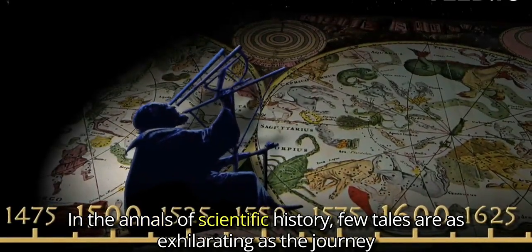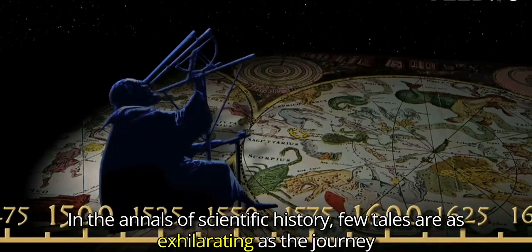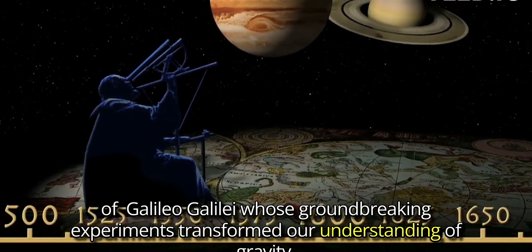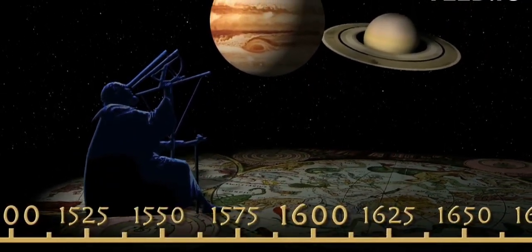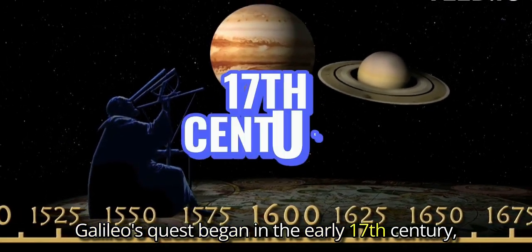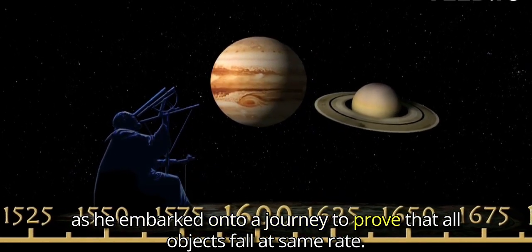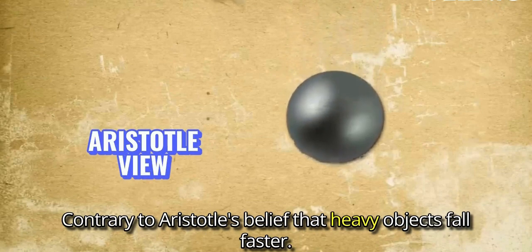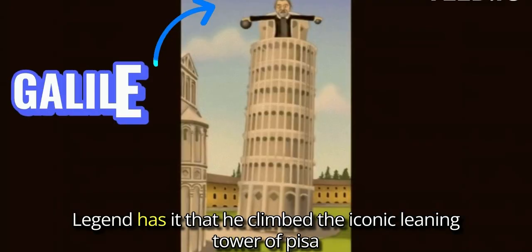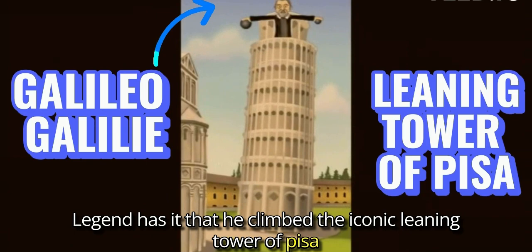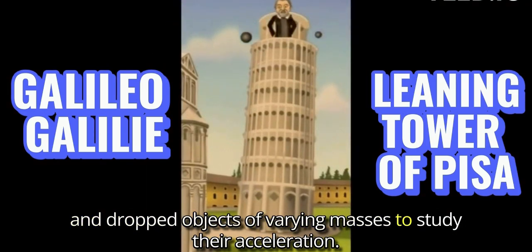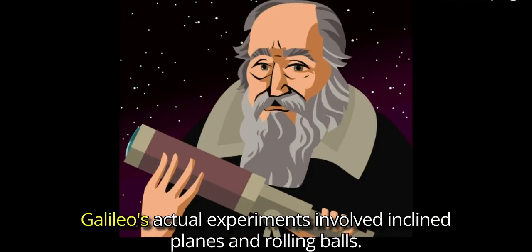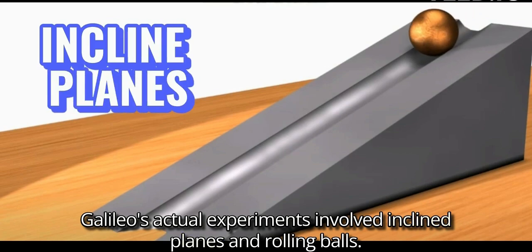In the annals of scientific history, few tales are as exhilarating as the journey of Galileo Galilei, whose groundbreaking experiments transformed our understanding of gravity. Galileo's quest began in the early 17th century, as he embarked on a journey to prove that all objects fall at the same rate, contrary to Aristotle's belief that heavy objects fall faster. Legend has it that he climbed the iconic leaning tower of Pisa and dropped objects of varying masses to study their acceleration. While the truth of this tale is debated, Galileo's actual experiments involved inclined planes and rolling balls.